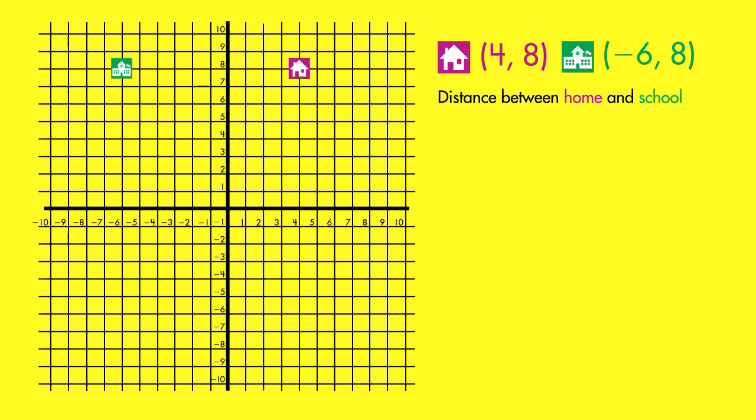home and school have the same y-coordinate, 8. So we find the distance between them by counting the number of units between their x-coordinates, 4 and -6. From home to school, there are 10 units.